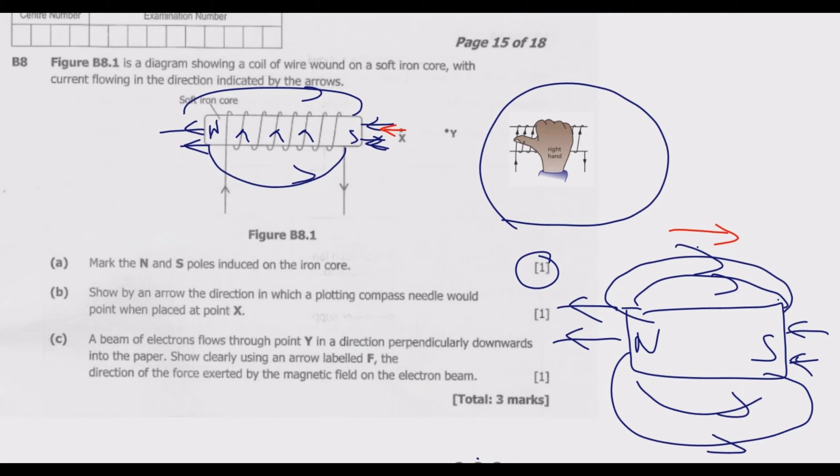Let's look at part C. A beam of electrons flows through point Y in a direction perpendicularly downwards into the paper. So into the paper at Y. Show clearly using an arrow labeled F the direction of the force exerted by the magnetic field on the electron beam. To answer this question, we use Fleming's left-hand rule.